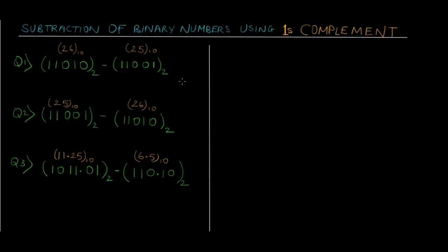As you can see on the screen, we have three different numericals and we have to perform subtraction. The first one is 26 minus 25. The second is 25 minus 26, so we are going to be getting a negative number — this was the issue with normal subtraction method. Using ones complement we can perform subtraction and get negative results as well. We also have twos complement which we'll see in later tutorials. The last question involves a decimal point, so we have fractional binary number subtraction.